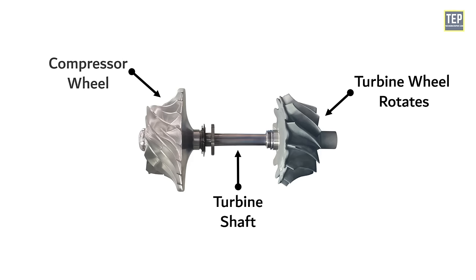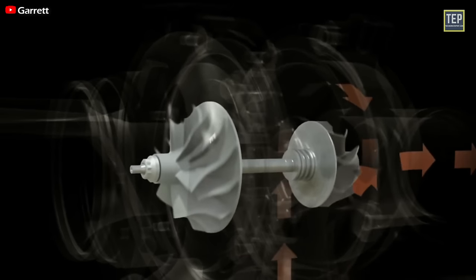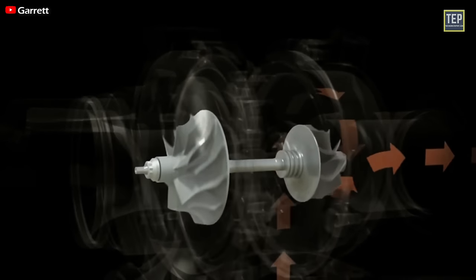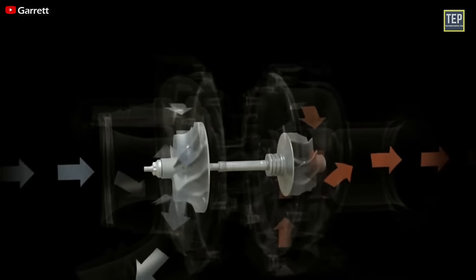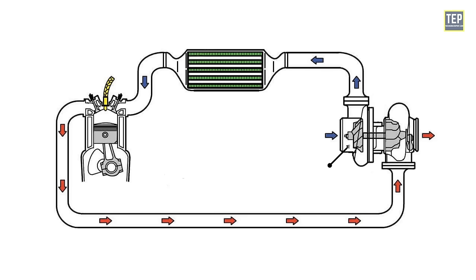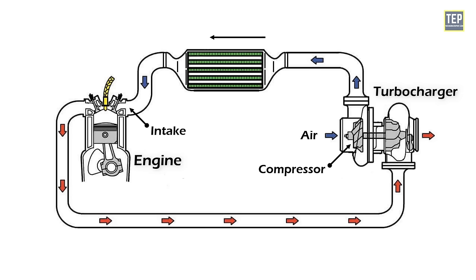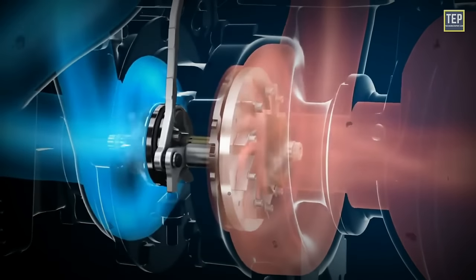The compressor wheel has a fixed connection to the turbine wheel via a common shaft, so when the turbine wheel spins, the compressor wheel also spins. The compressor's job is to suck air into the turbocharger, pressurize it, and force it into the engine intake manifold, and from there into the combustion chamber.